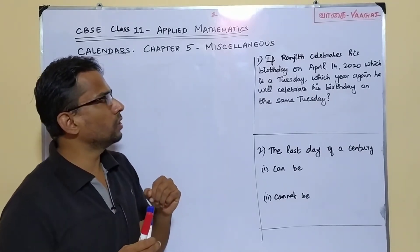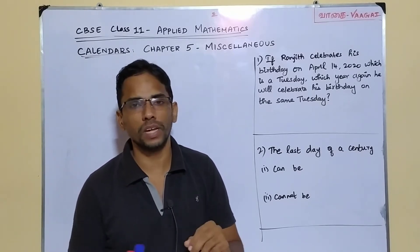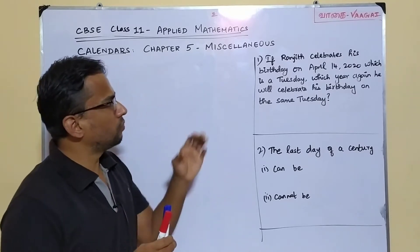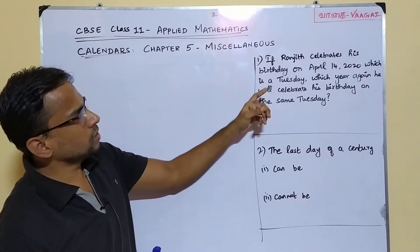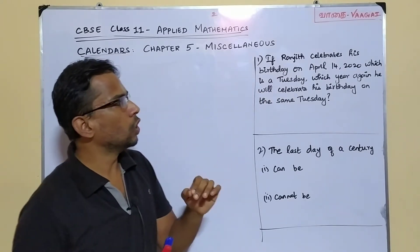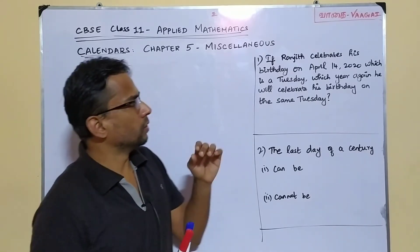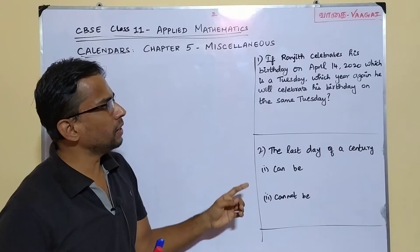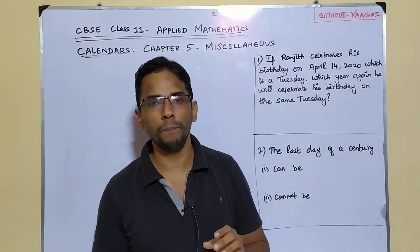We are here with two questions, and those two questions are what we are going to solve in this session. Our first question: if Ranjit is celebrating his birthday on April 14, 2020, which is a Tuesday, then in which year will he again be celebrating his birthday on the same Tuesday?